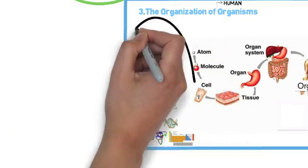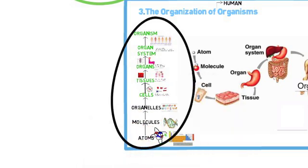So let's do that one more time, ladies and gentlemen. We have atoms, molecules, organelles, cells, tissues, organs, organ systems, organisms. One more time. Atoms, molecules, organelles, cells, tissues, organs, organ systems, organism.